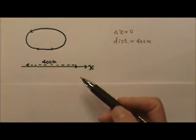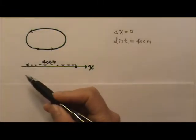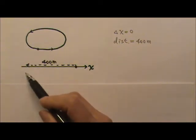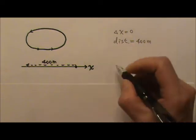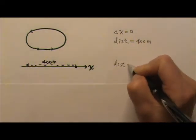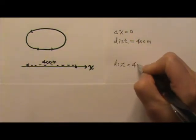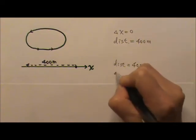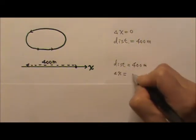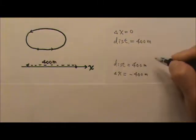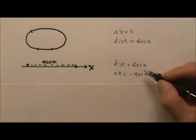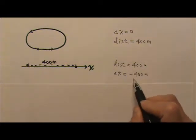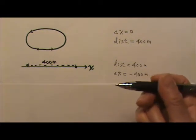What if you travel along the x-axis in the negative x direction for 400 meters without zigzagging or curving around? Your distance traveled would be 400 meters. Your displacement would be negative 400 meters. These two would have the same numbers, the same magnitude. It's just that your displacement has this negative sign for the negative x direction.